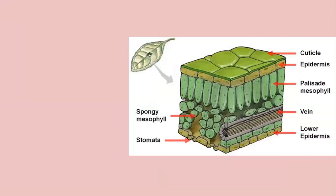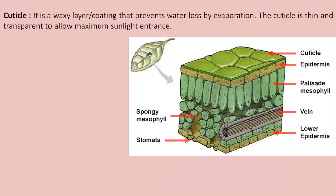Looking at the cross section of a leaf, you will understand that a leaf structure is made up of certain layers of cells. We'll learn about each one in a bit of detail. Let us begin with the first and uppermost layer — the cuticle. The cuticle is a waxy coating that prevents water loss by evaporation. It is thin and transparent to allow maximum sunlight to penetrate inside the leaf.